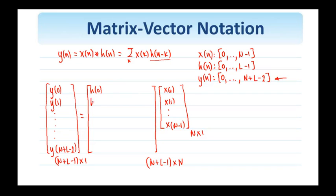y(1) is equal to h(1) times x(0) plus h(0) times x(1). Then I'll have here this row of h's. And the rest of the values here not shown, they're all 0.